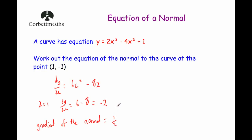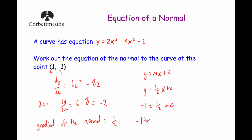So the gradient of the normal is equal to a half. We're going to use y equals mx plus c, and put in that half as the gradient: y equals a half x plus c. Then we substitute in the point (1, -1): negative 1 equals a half times 1, that's a half plus c. Subtracting a half from both sides gives minus 1 and a half equals c. So the equation of the normal is y equals a half x subtract 1 and a half — which we can also write as y equals a half x subtract 3 over 2, or as a decimal, y equals 0.5x subtract 1.5.